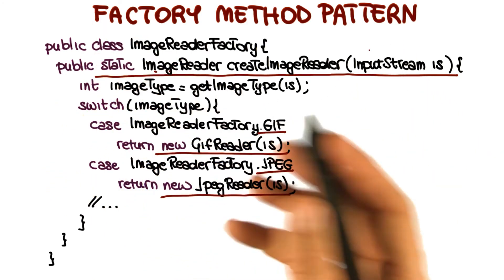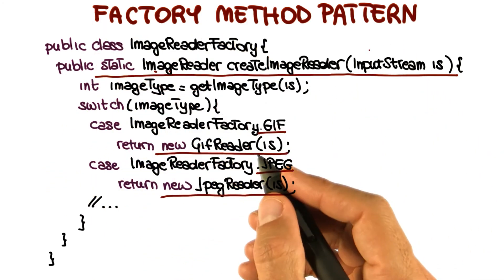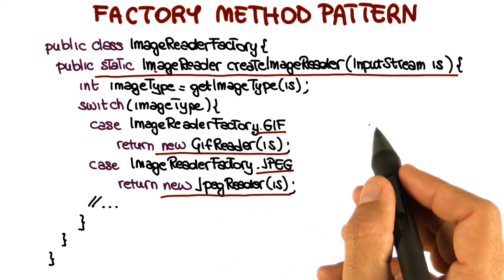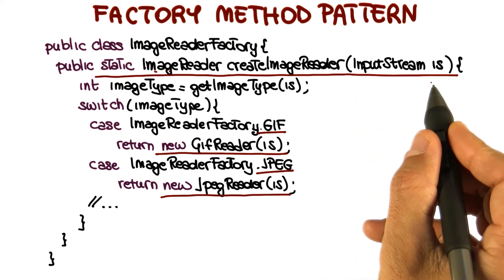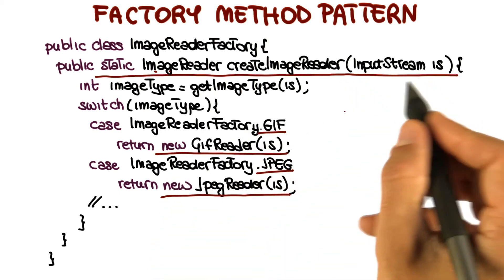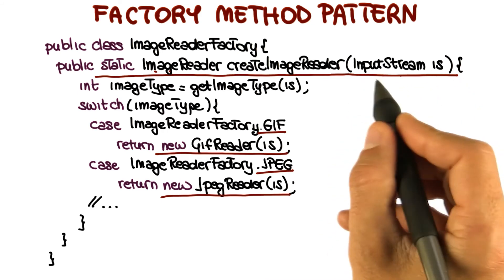So why is this a situation in which it's appropriate to use the factory method pattern? Because it corresponds exactly to the cases we saw before of applicability. This is a case in which we don't know the type of the object we need to create until we run the code, because it depends on the content of the InputStream.